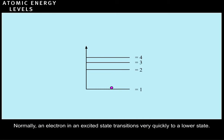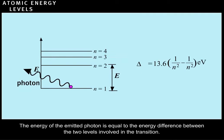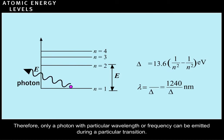Normally, an electron in an excited state transitions very quickly to a lower state. When this happens, the atom emits energy as a photon. The energy of the emitted photon is equal to the energy difference between the two levels involved in the transition. Therefore, only a photon with particular wavelength or frequency can be emitted during a particular transition.